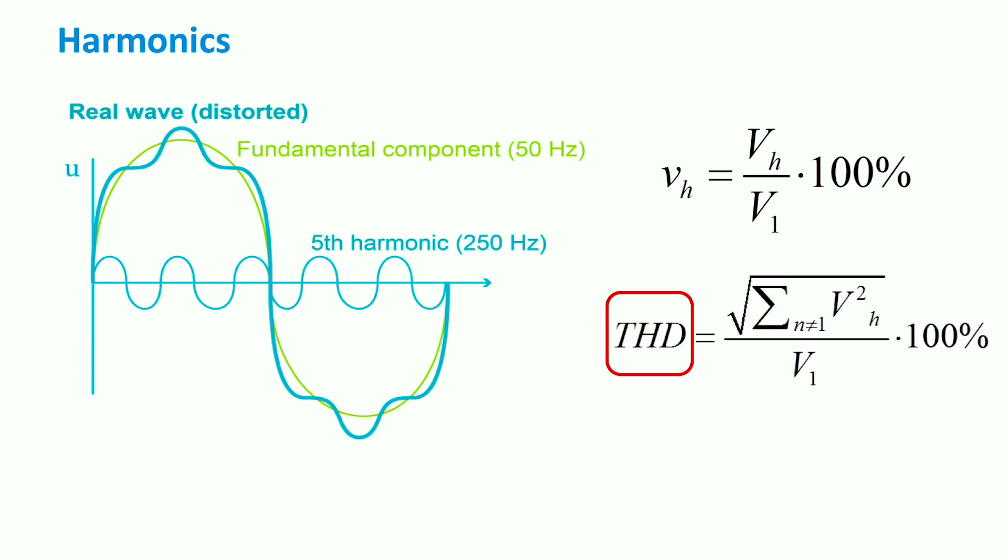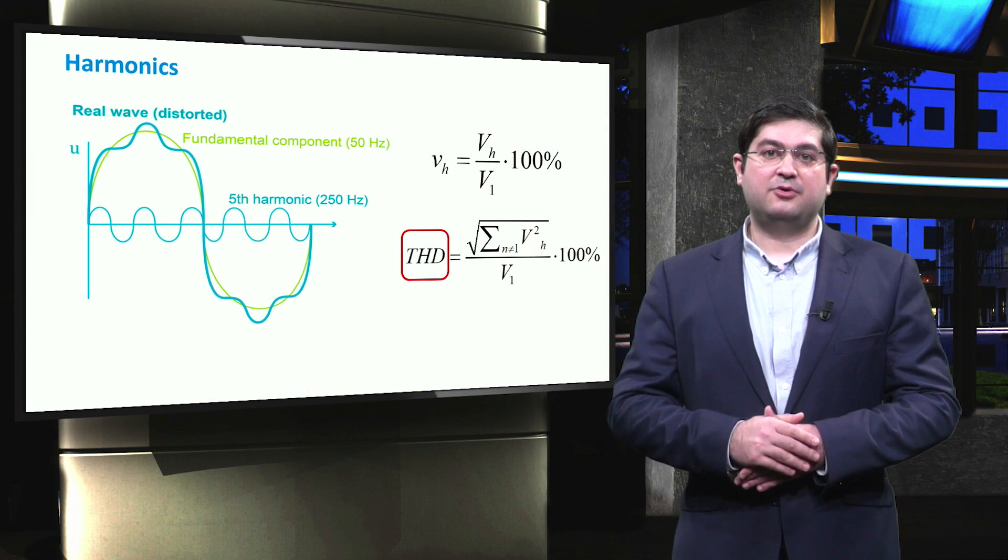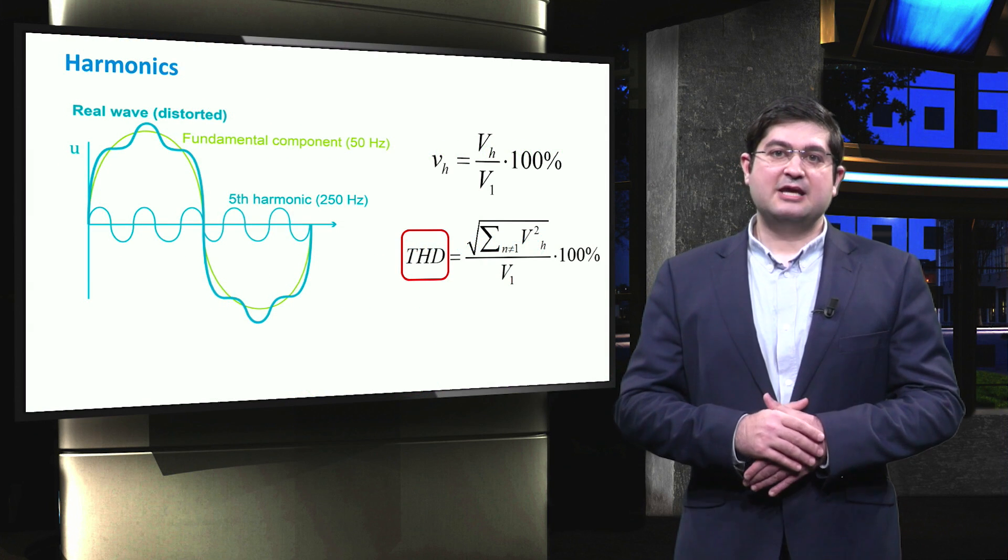We can define the total harmonic distortion, the so-called THD, as the ratio of the root mean square of the harmonic content H to the value of the fundamental component expressed as a percentage.